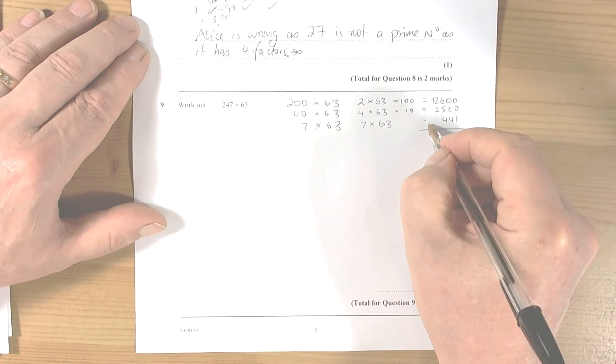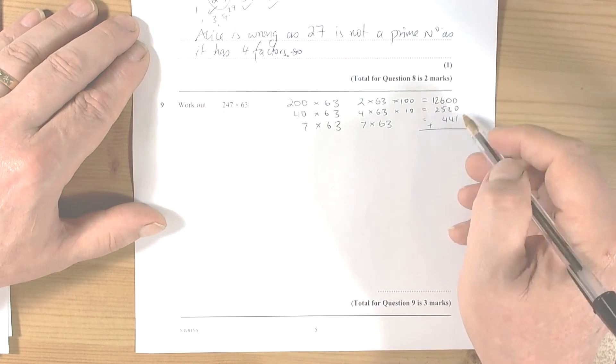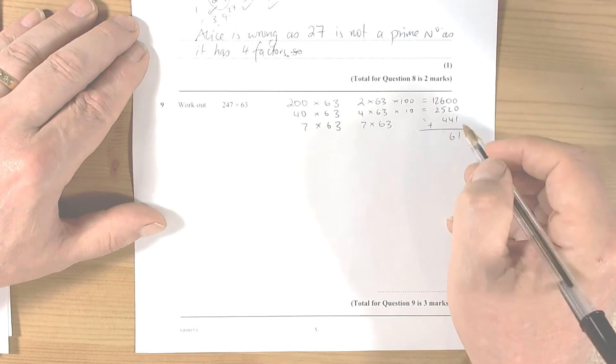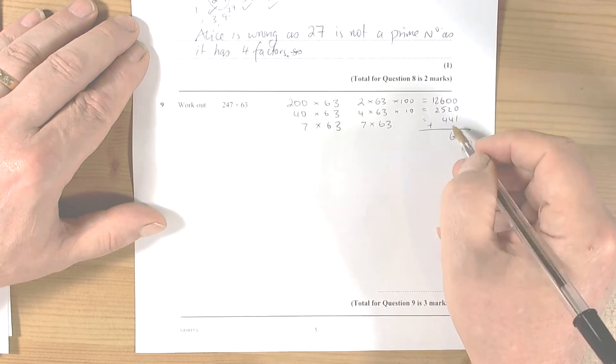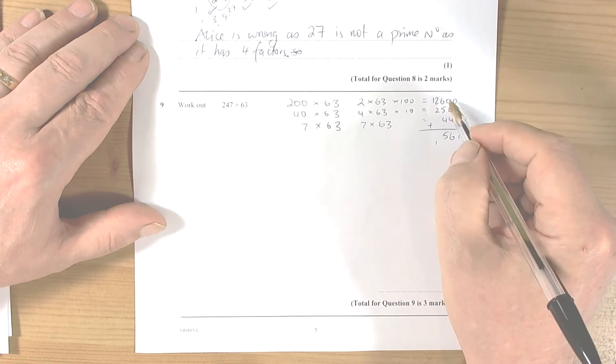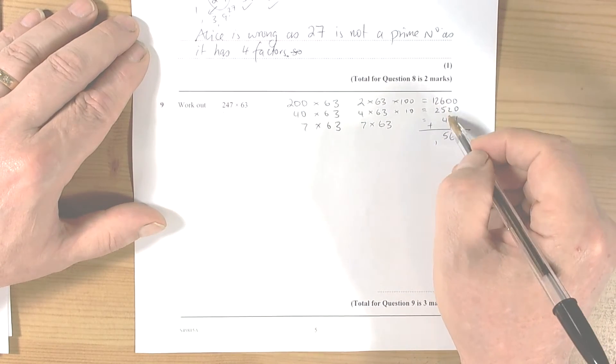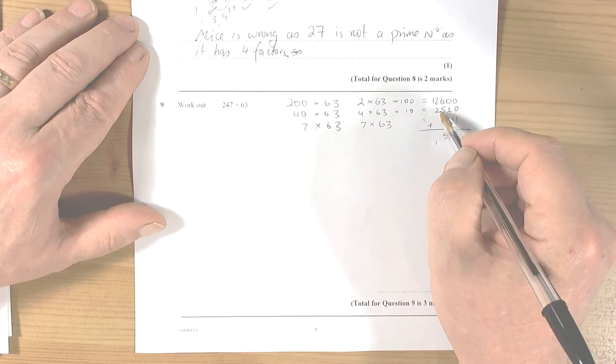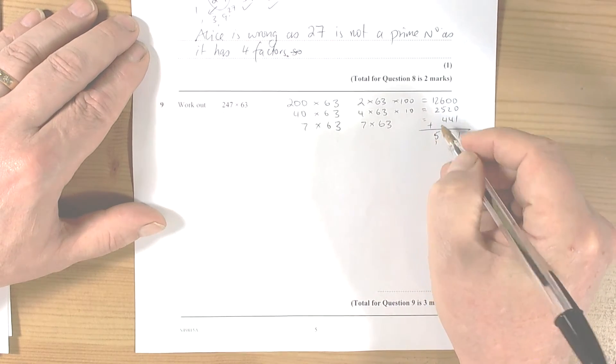And then when you add all those together to get your final answer, we get 1, 2, and 4 makes 6, 6 and 5 is 11, plus 4 is 15, carry 1 over. And we'll carry the 100 over. 2 plus 2 is 4, plus 1 is 5, and then the 1.